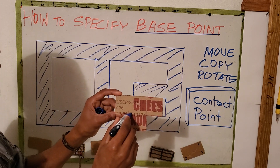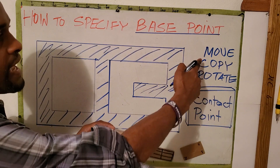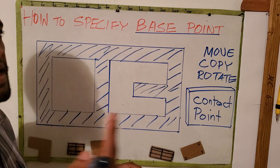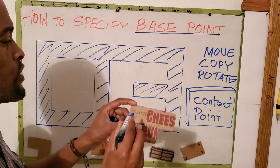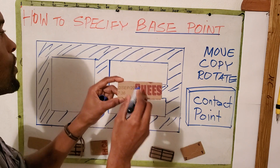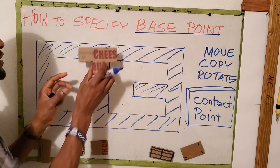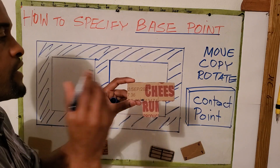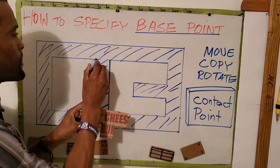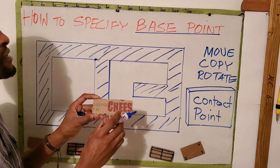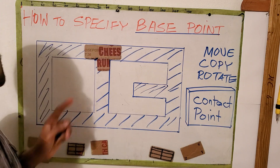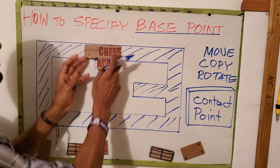If I specify here as the base point, I will type M for Move and press Enter. The command bar will then ask me to specify a base point. I could choose either this point or this point — either of these could align the stiffener in there. If I choose this as my base point, I would need to snap onto this point to align the stiffener into that wall.